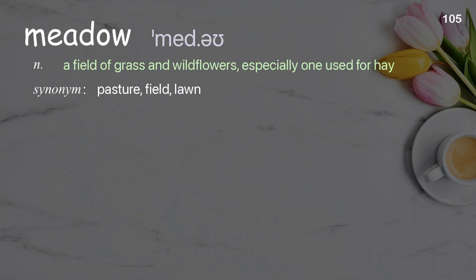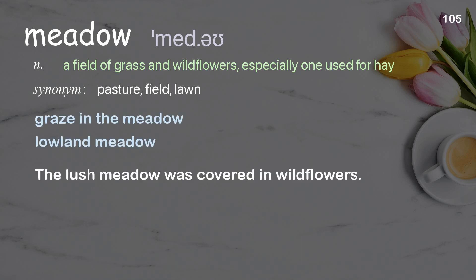Meadow: A field of grass and wildflowers, especially one used for hay. Examples: Graze in the meadow, Lowland meadow. The lush meadow was covered in wildflowers.